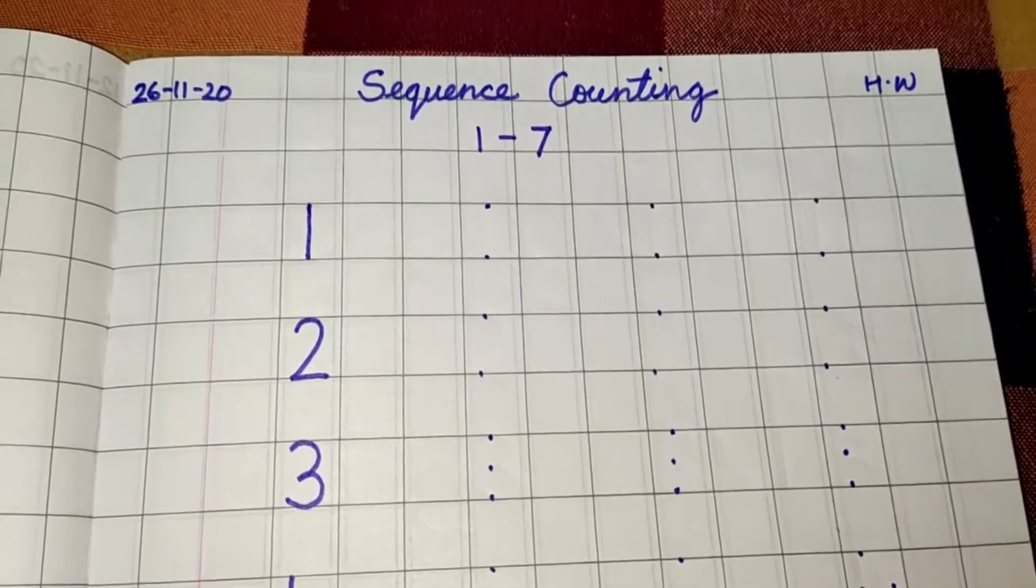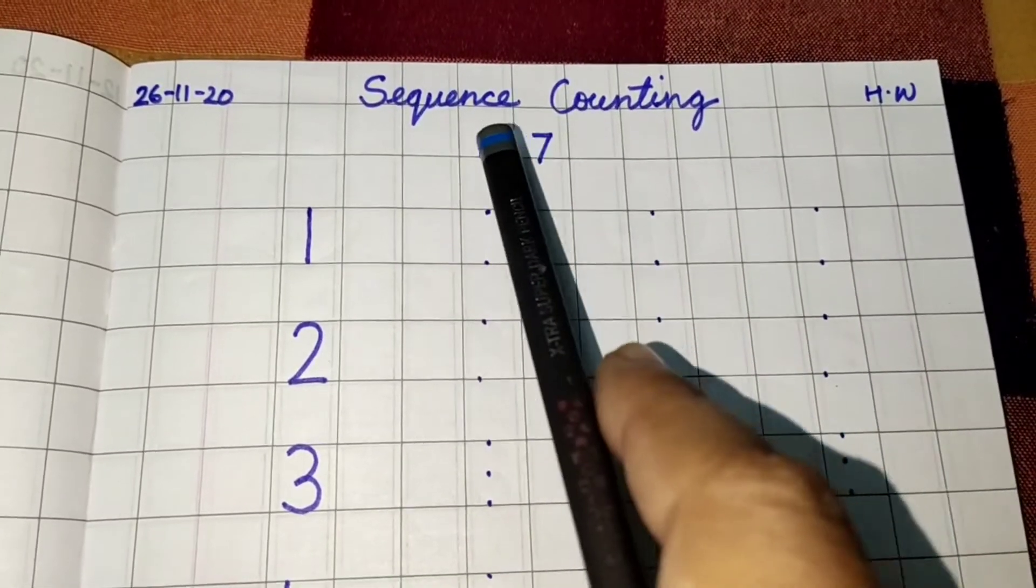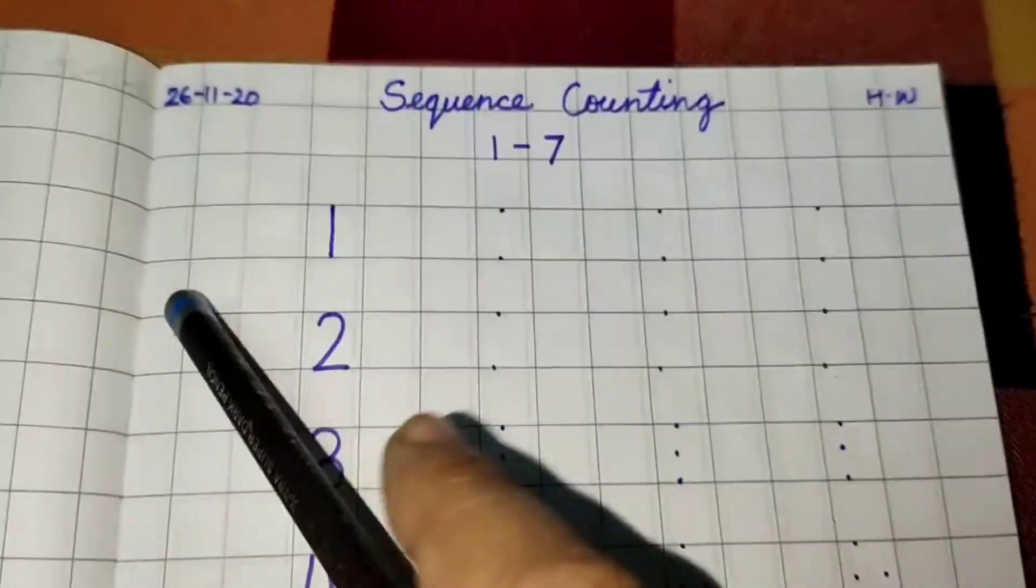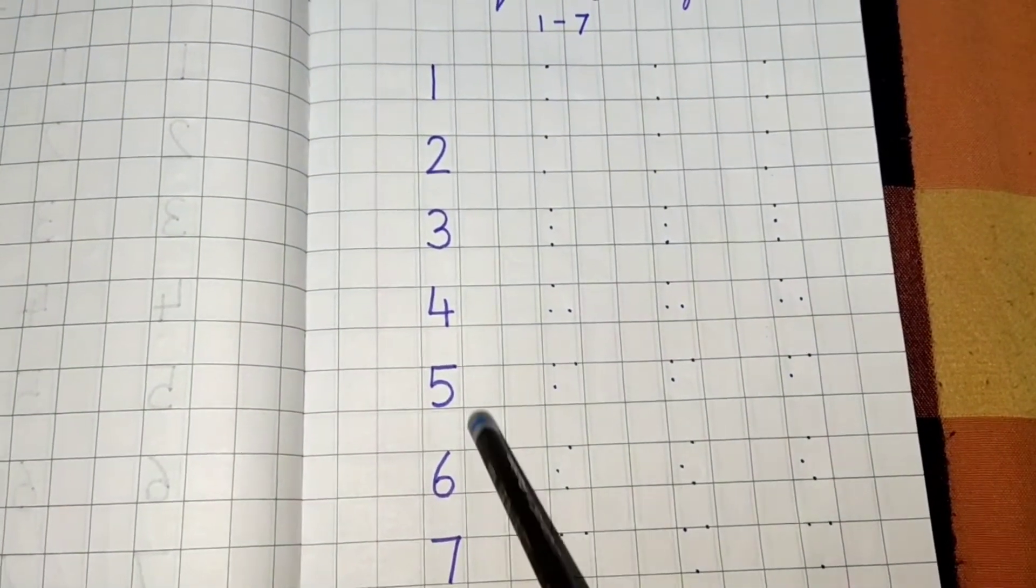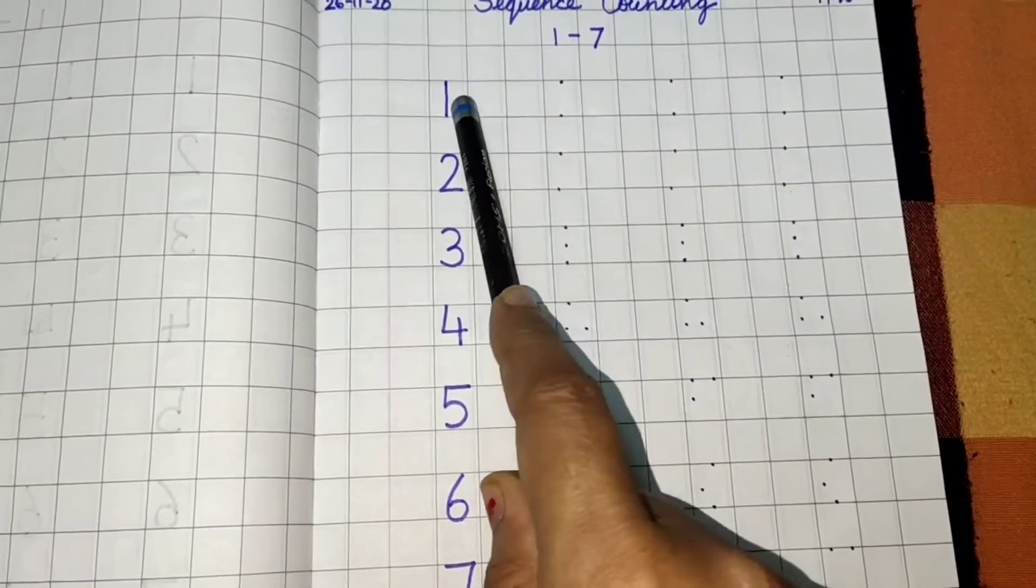Today we will do sequence counting 1 to 7. Aapko dekho ma'am ne line wise, sequence wise numbers likhe hai. Start from the top.